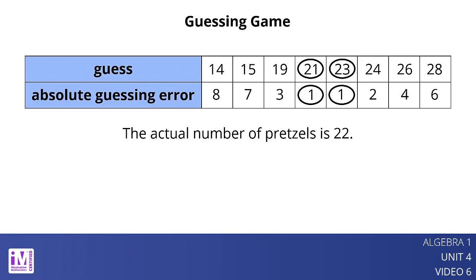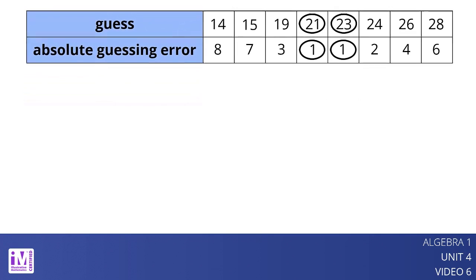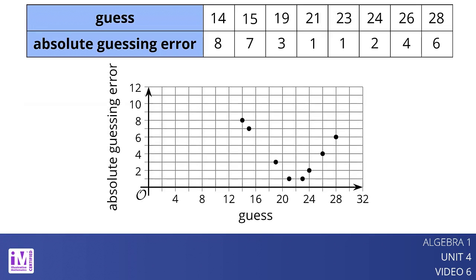Let's plot the guesses and absolute guessing errors. Notice the v-shape.